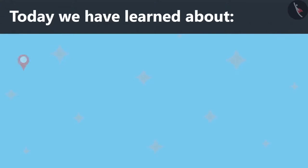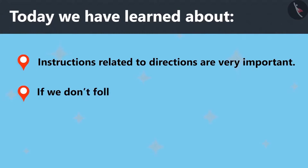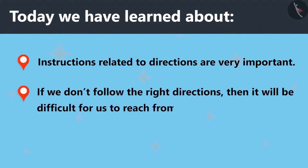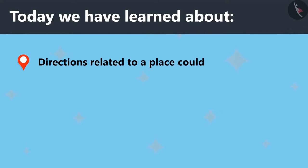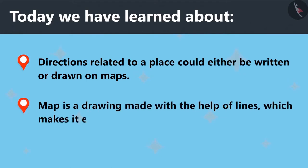Today we have learned that instructions related to directions are very important. If we don't follow the right directions, then it will be difficult for us to reach from one place to another. Directions related to a place could either be written or drawn on maps. A map is a drawing made with the help of lines which makes it easy to reach different places.